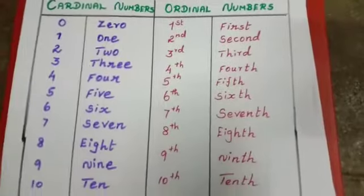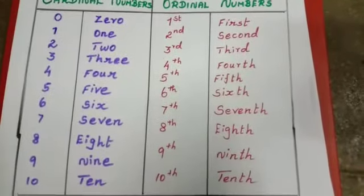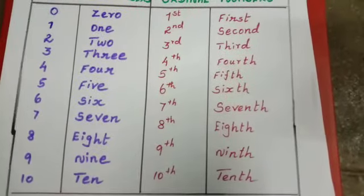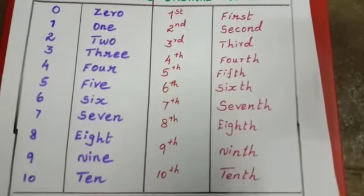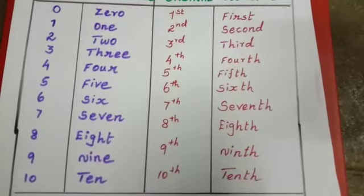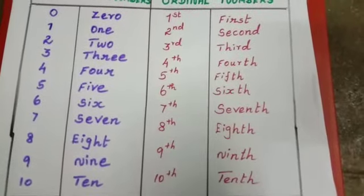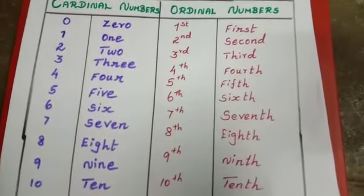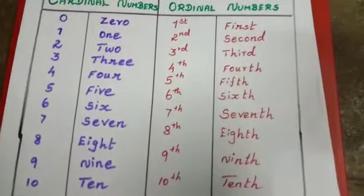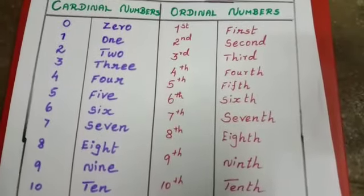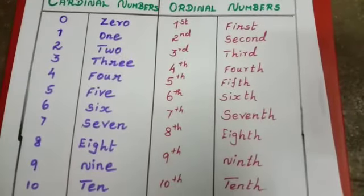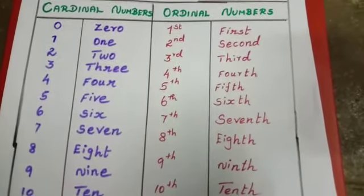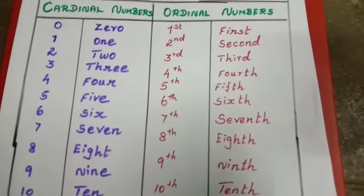Which row do you sit in, in class? I sit in the 1st row. I sit in the 2nd row. I sit in the last row. So you use ordinal numbers: 1st row, 2nd row, 3rd row.